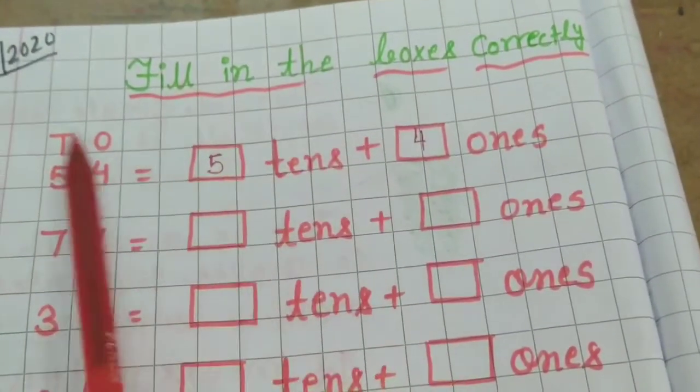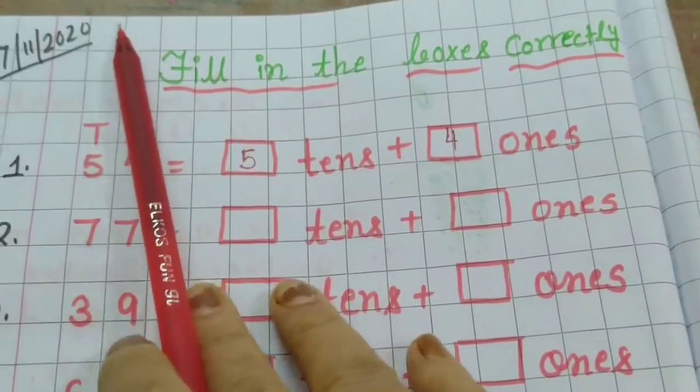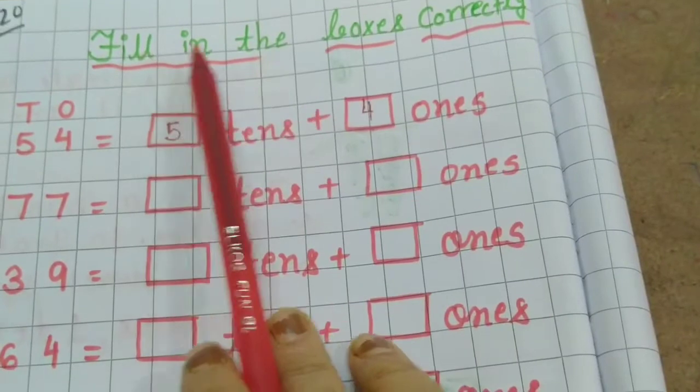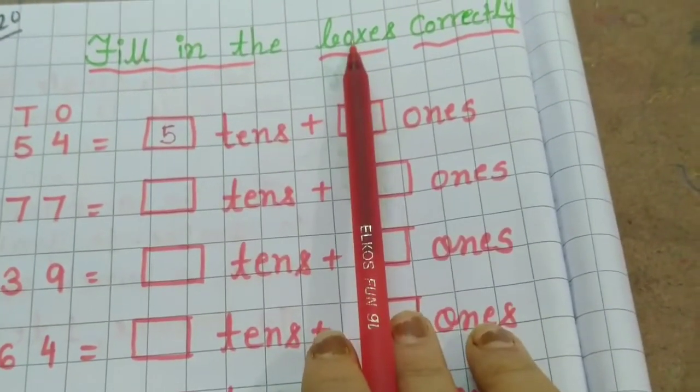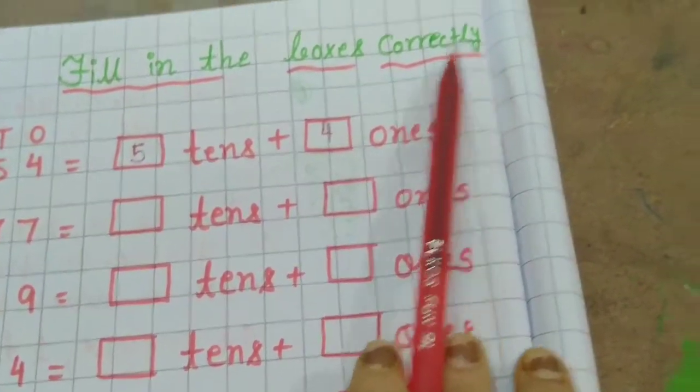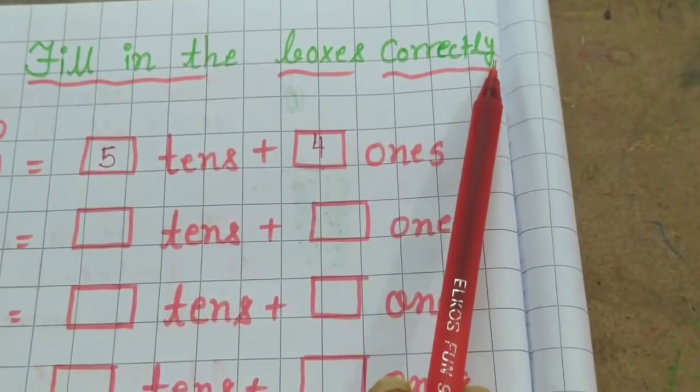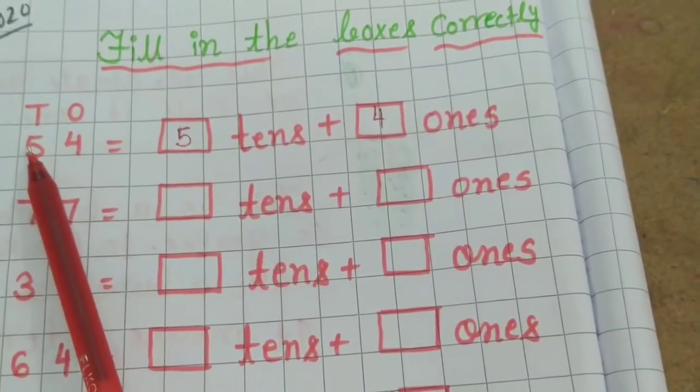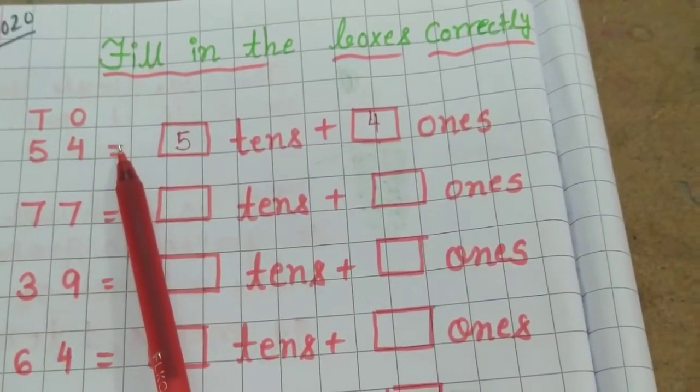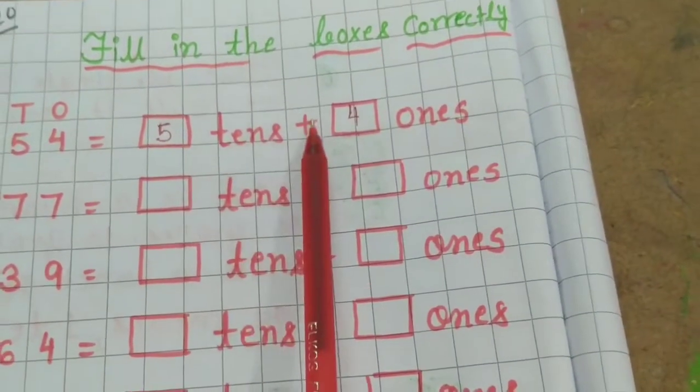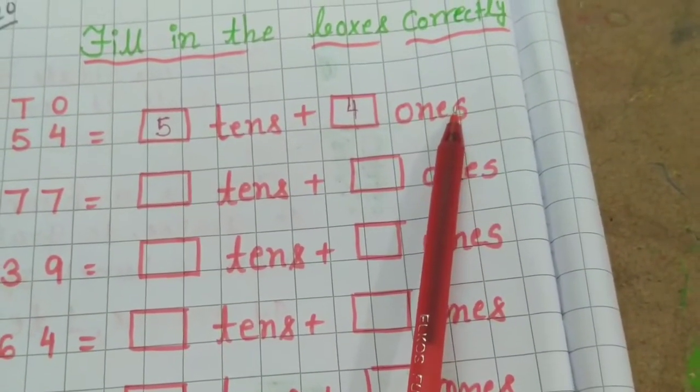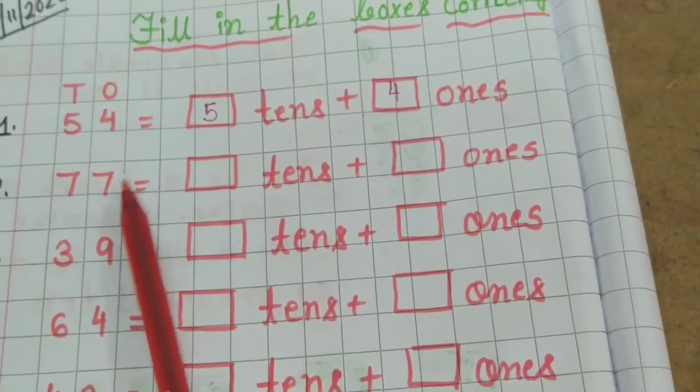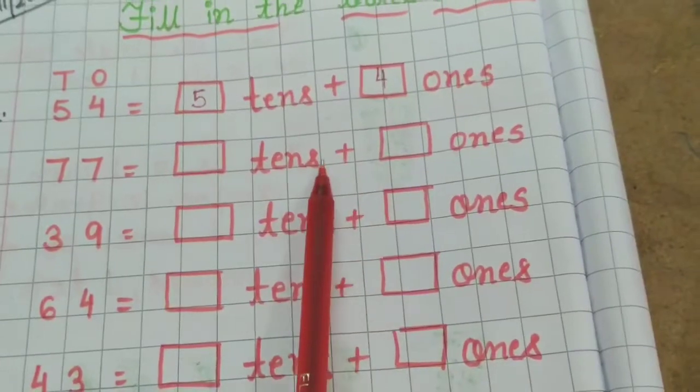Here you can see I have given the date 7, 11, 2020 and here I have written fill in the boxes correctly. Here you can see I have written 54 means 5 tens plus 4 ones. Number 2, 77 means dash tens and dash ones so you have to do it.